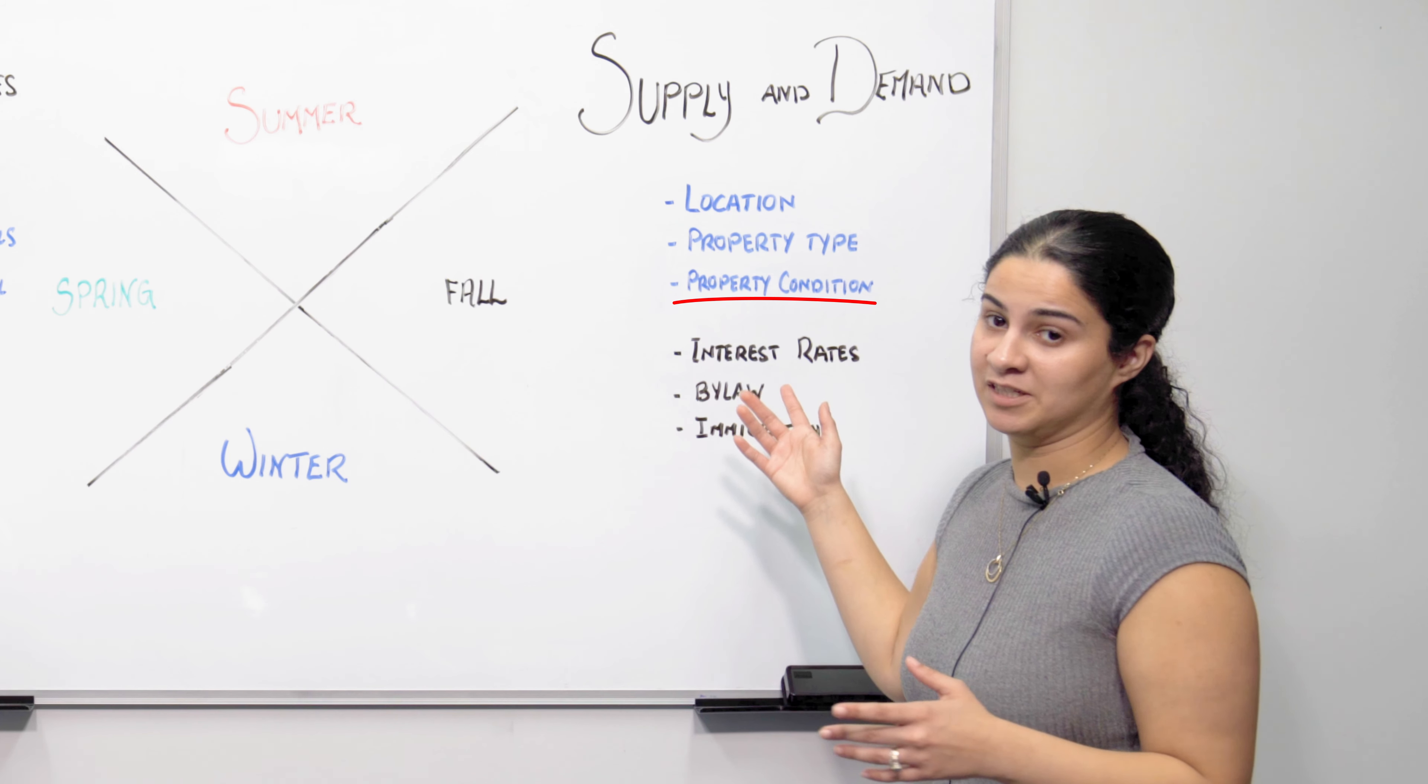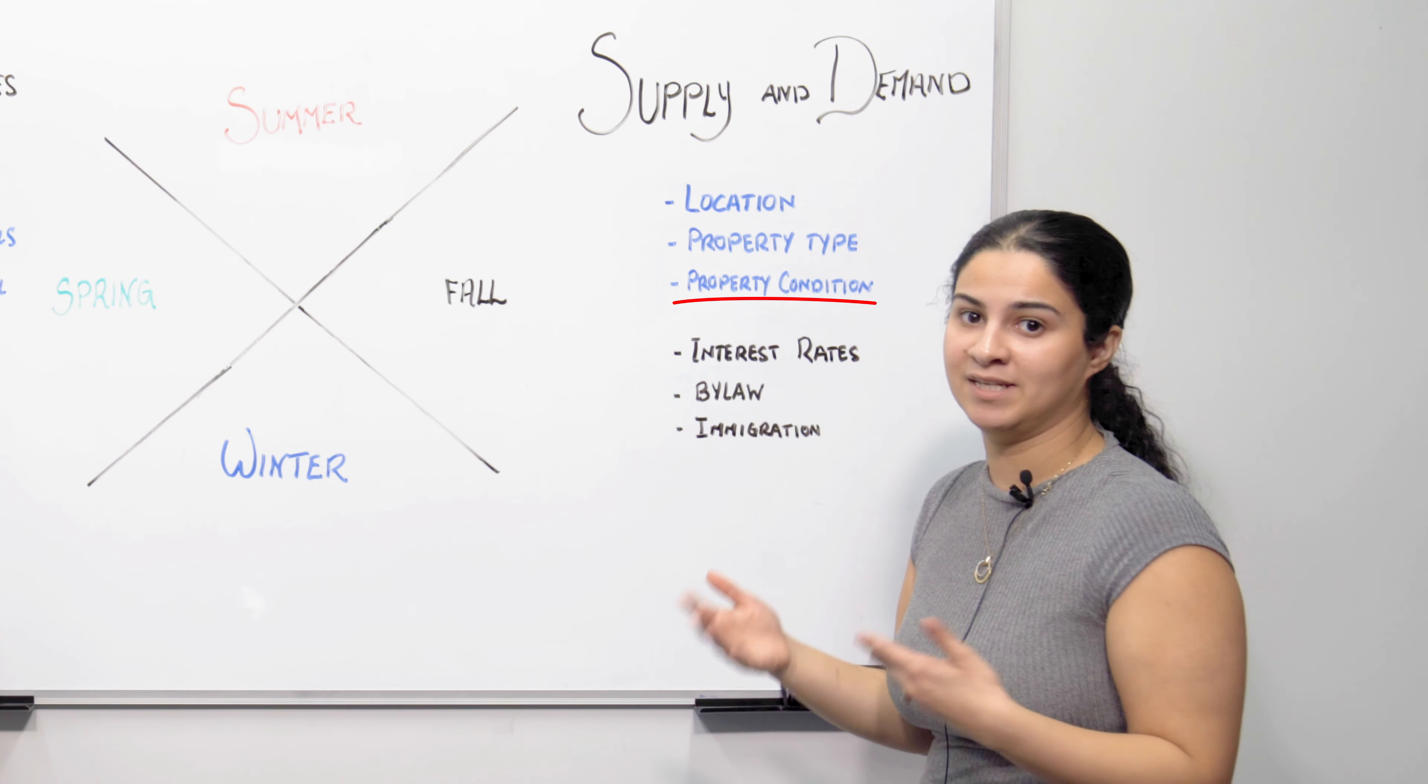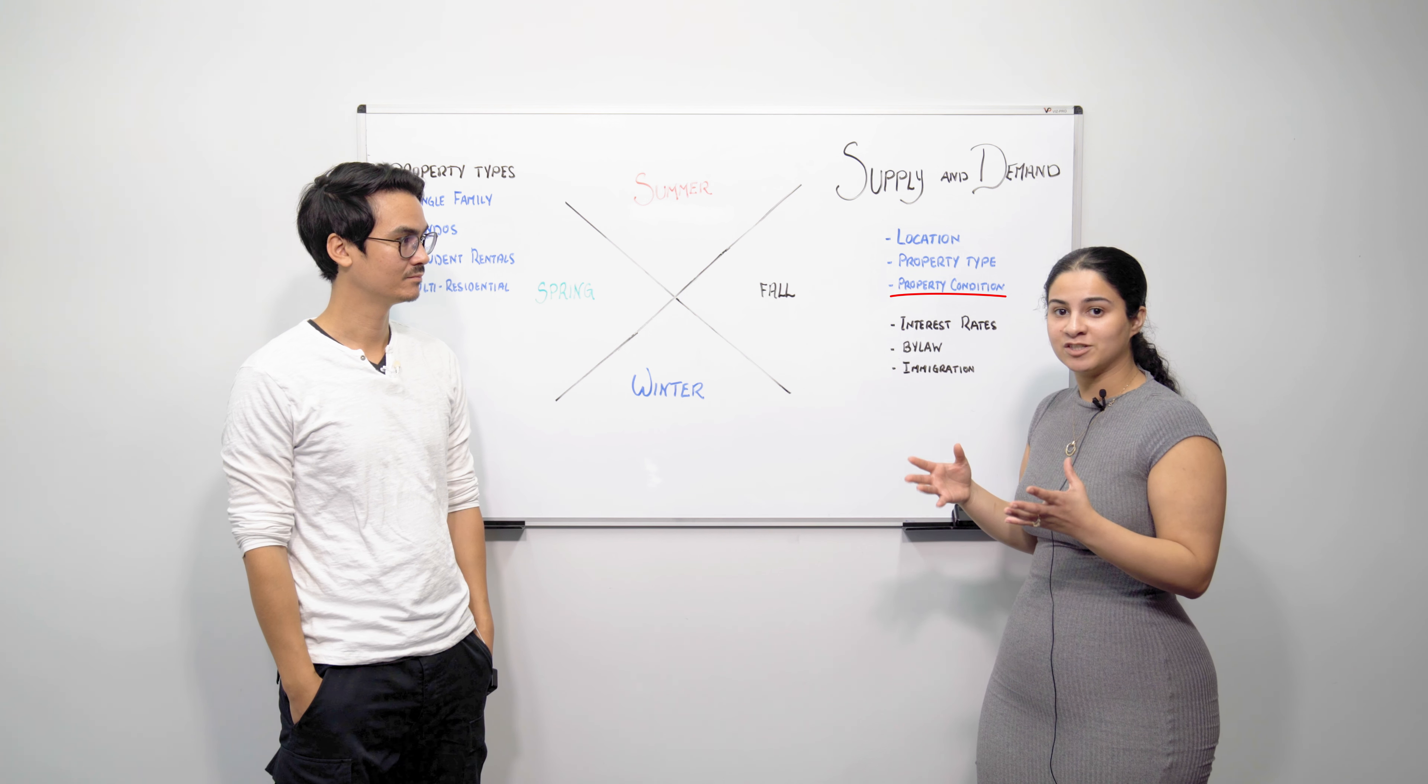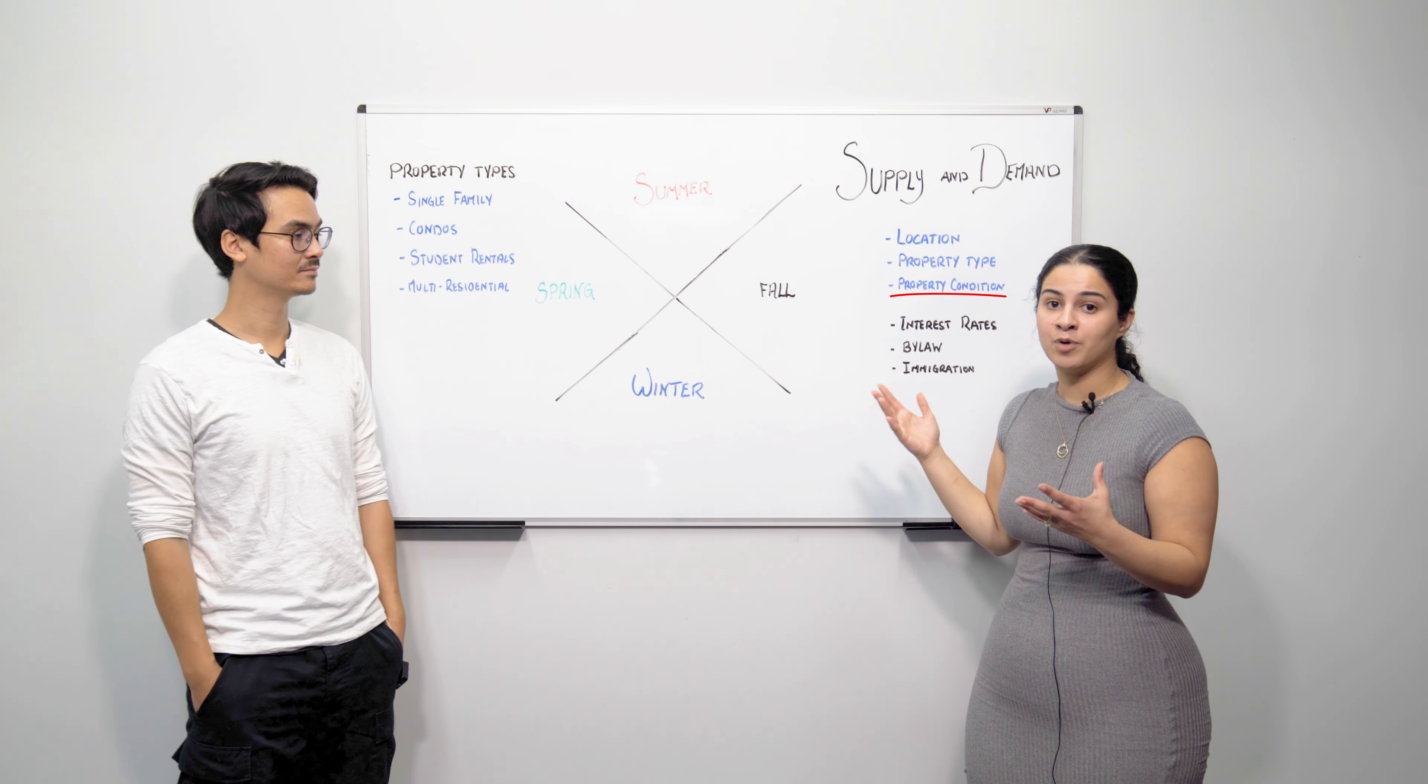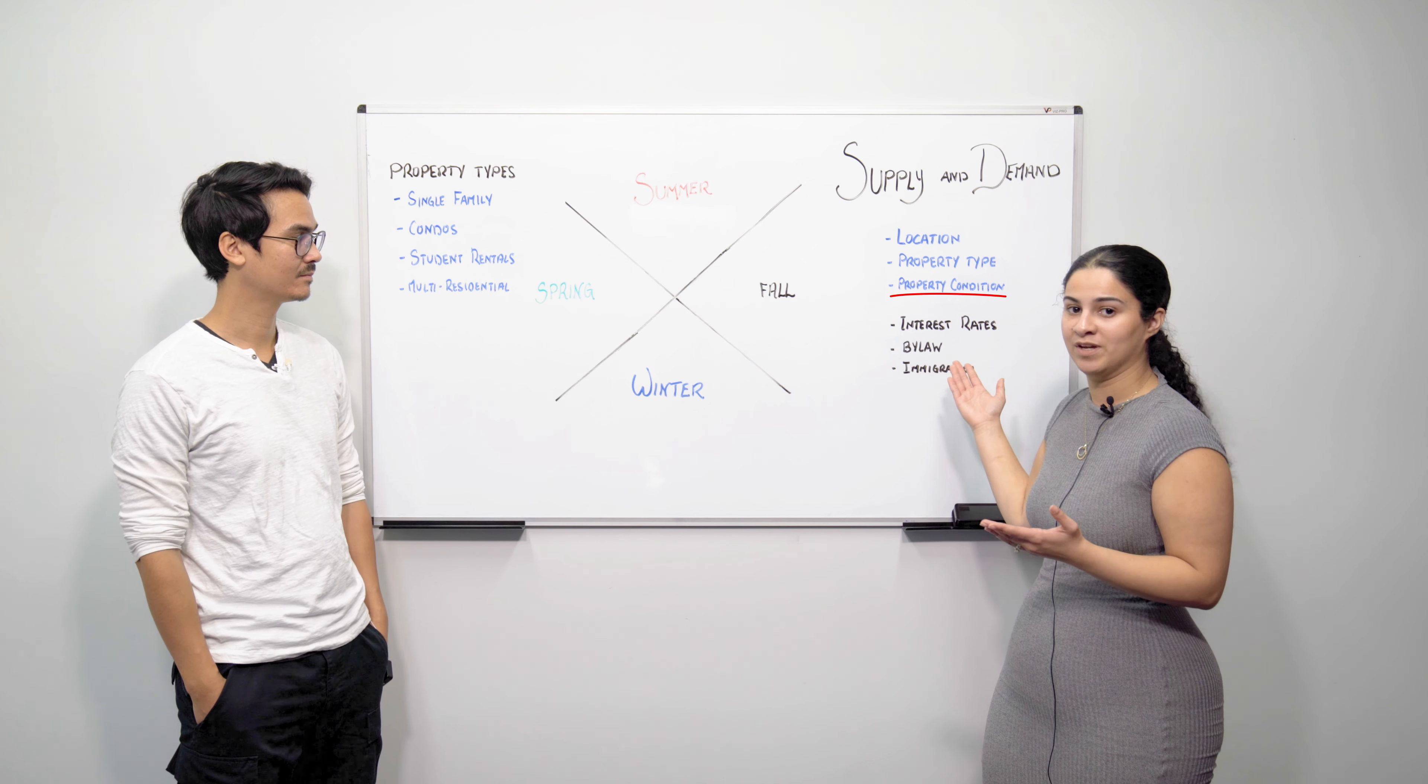That brings us over to property conditions. So when we're talking about property condition we're looking at the physical conditions, so will it need some work, but we're also looking at are there tenants living there. All of these factors will really play a huge role into when it comes time to sell because essentially let's say you have a single family buying a property that's tenanted, they will definitely want a vacant property so that they can move in with their family.